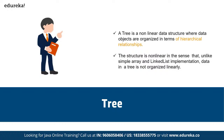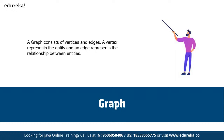A graph consists of vertices and edges. A vertex represents an entity and an edge represents the relationship between different entities.